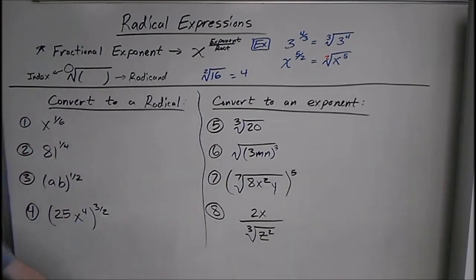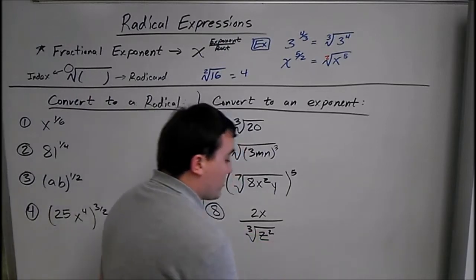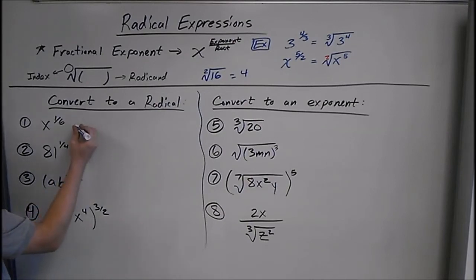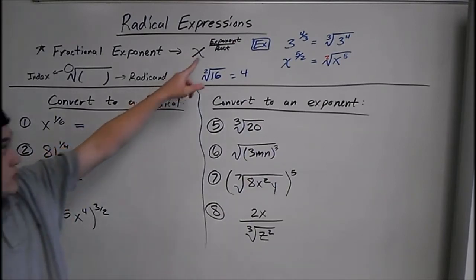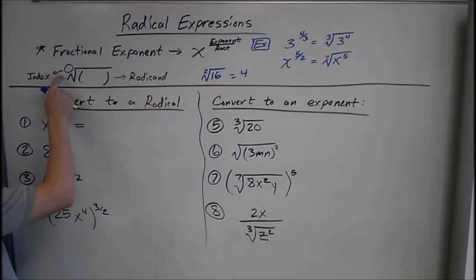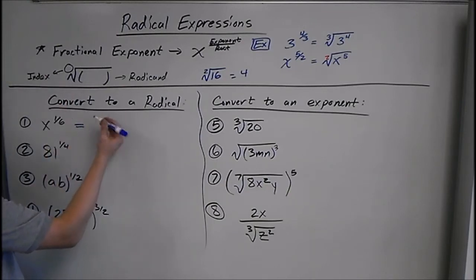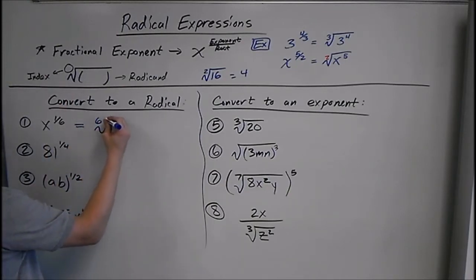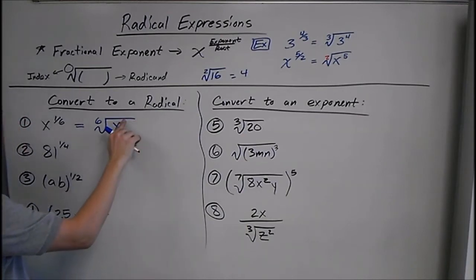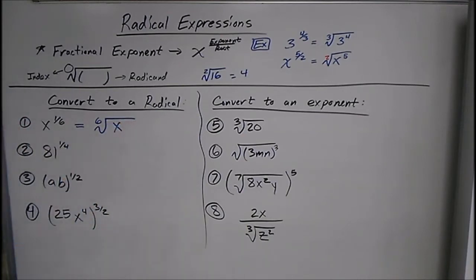You need to know how to convert a radical to an exponent and vice versa. For the first example, say we have x to the 1 sixth power. Remember, it's exponent over root. Our exponent is 1 and our index is 6. So we could write this as the 6th root of x to the first power — but you don't really need the first power.